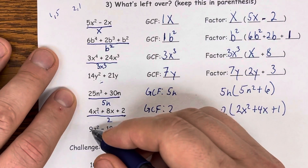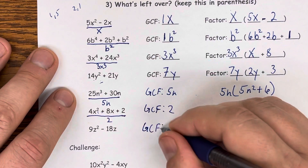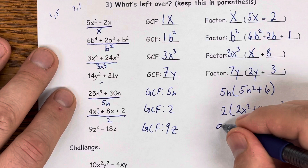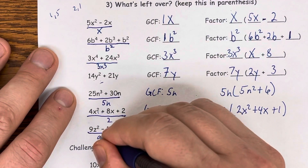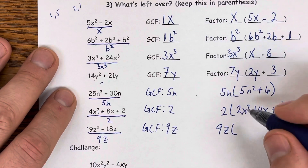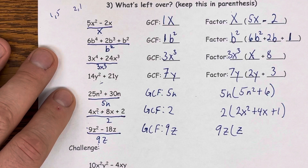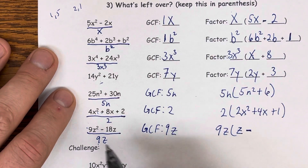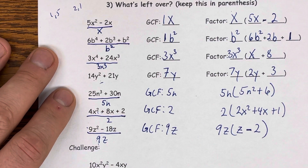For 9z² − 18z: GCF of 9 and 18 is 9. The smallest exponent for the z's is just z. So I'm taking out 9z. 9z² ÷ 9z = z. 18z ÷ 9z = 2. So we get 9z(z − 2).